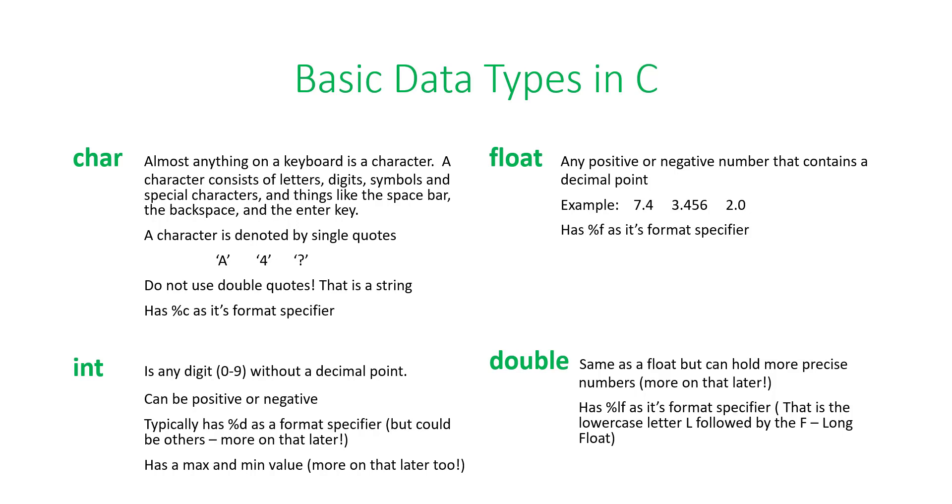Okay, so if we look at the right side, we have floats. Floats and doubles. The cool thing about floats and doubles is they're pretty much the same except their size. And you can bet that whatever the size of the float is in memory, the double is pretty much double that. So, it is any positive or negative number that contains a decimal point. So, I gave you some examples there. 7.4, 3.456, 2.0. Because it has a decimal point, the computer sees it as a float.